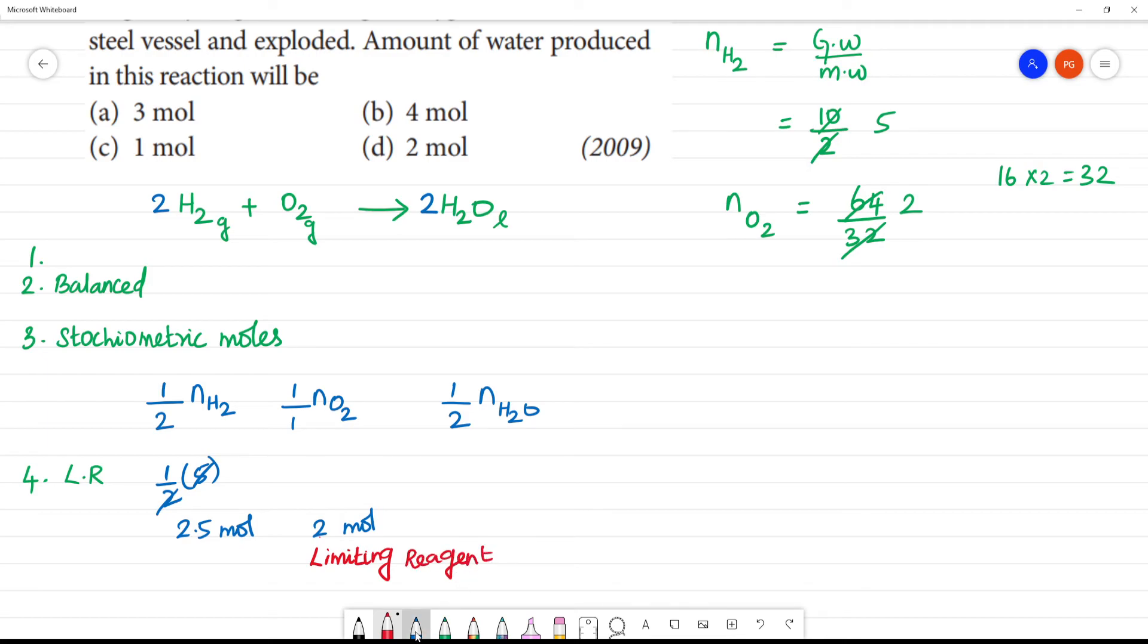Now the final answer. Number of moles of H2O. Using limiting reagent, number of moles of oxygen is compared with 1 by 2. Number of moles of H2O, this is 2 mole. You can get half. So number of moles of H2O is equal to 2 into 2 will be 4. The answer is 4 mole.